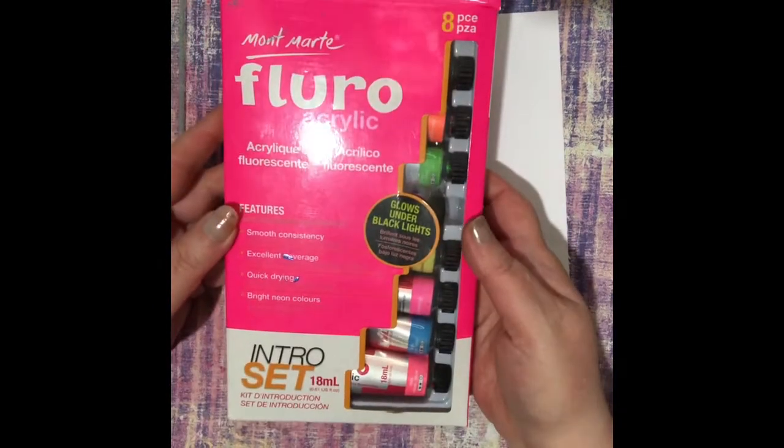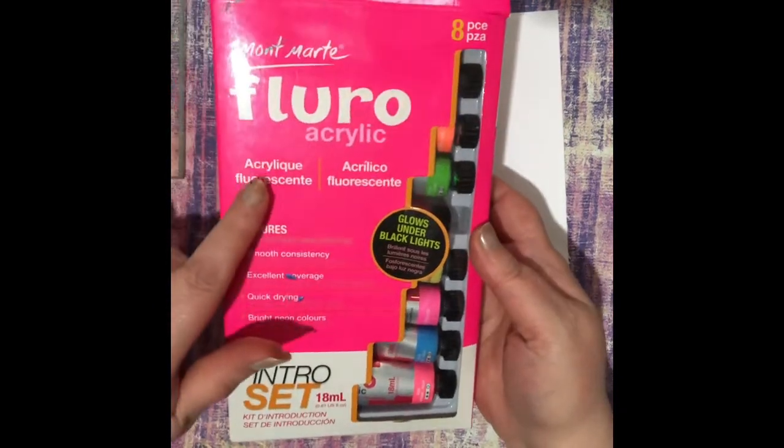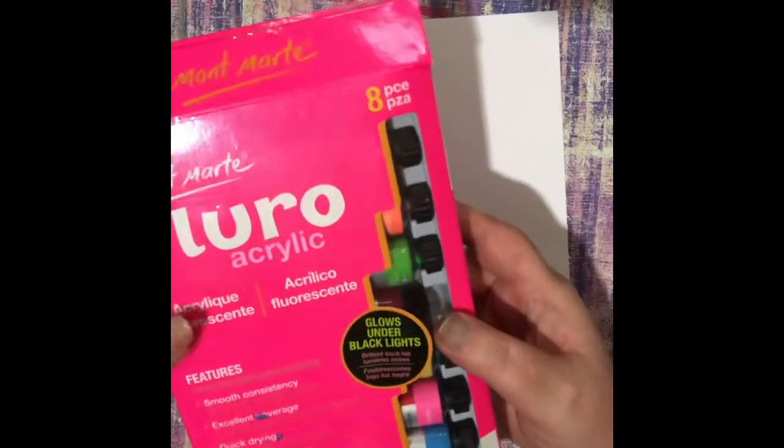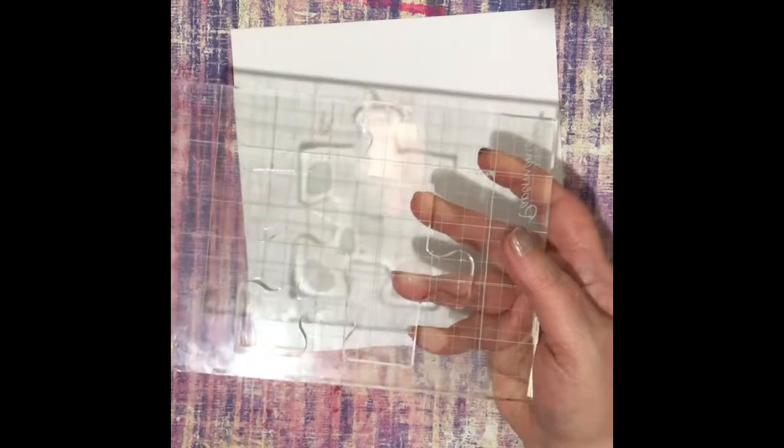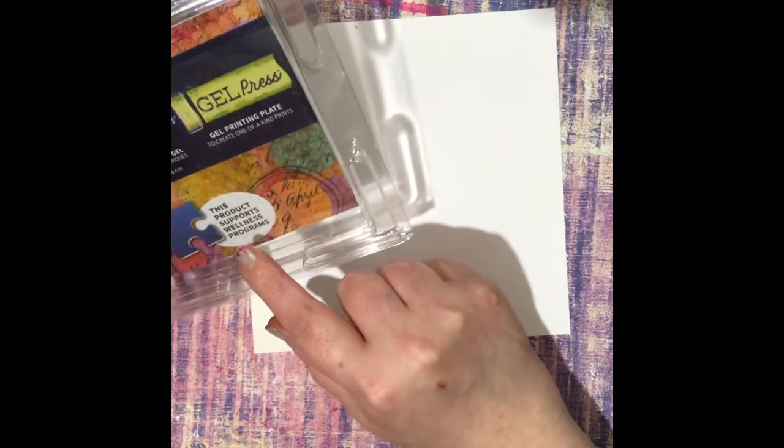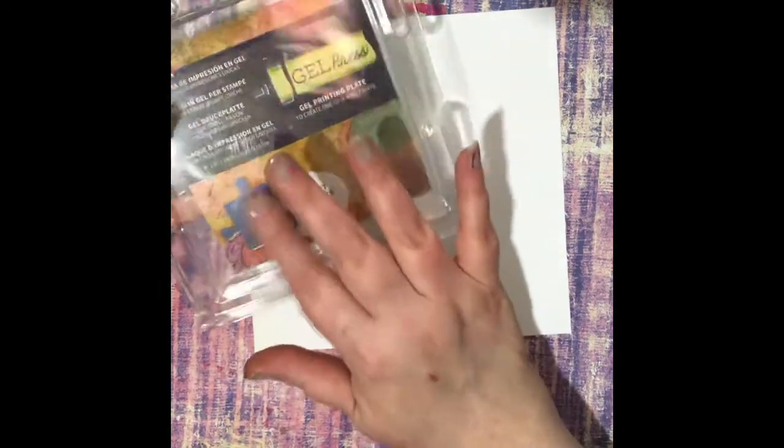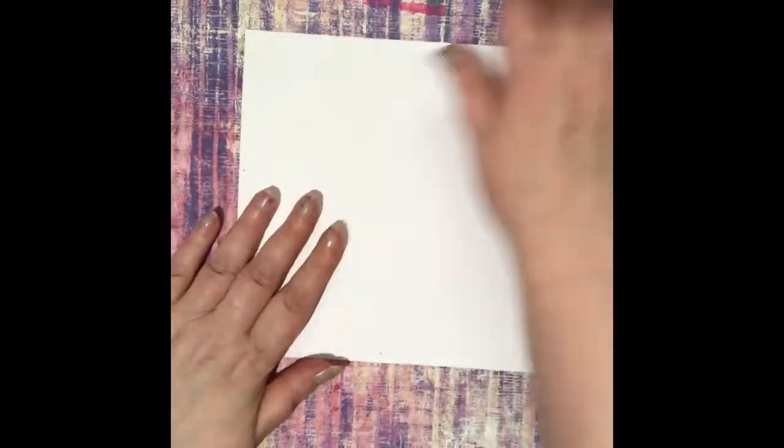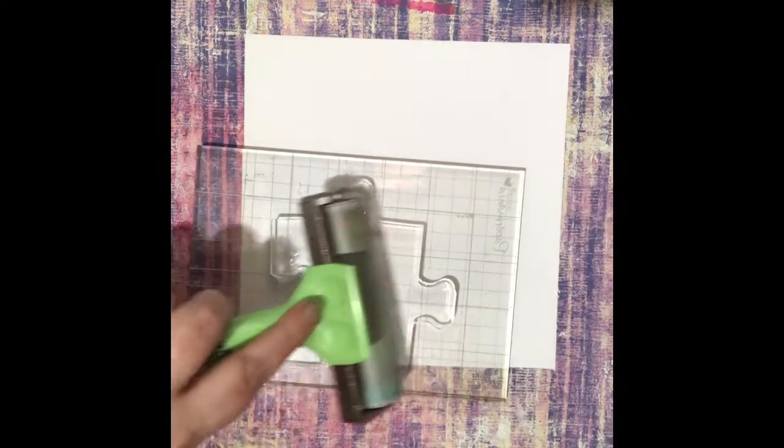I've got some fluorescent paints. These are the Mont Marte fluoro acrylic paints, all lovely colors. I've got a little brayer and I bought this puzzle piece. You may not be able to see it, but it's this JellyPress one that supports autism. This one says it supports wellness programs, but actually on the site it supports autism. I've bought this because I think it's lovely and also it's a good cause as well. Let's get some paint now and roll that out onto it.